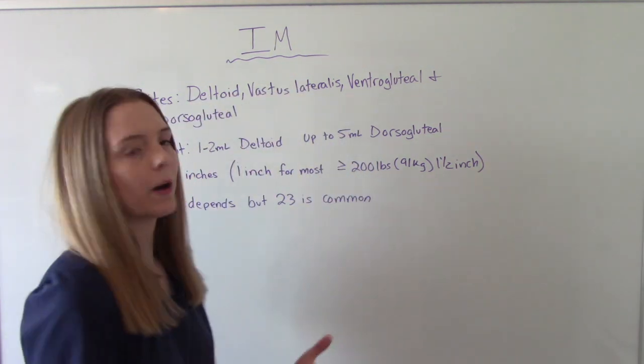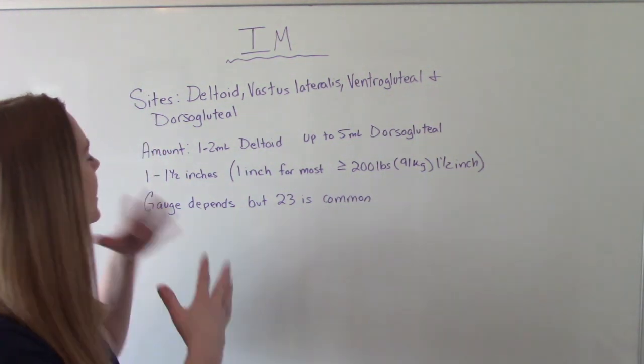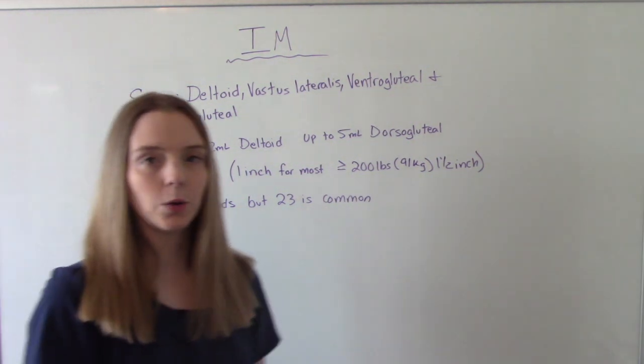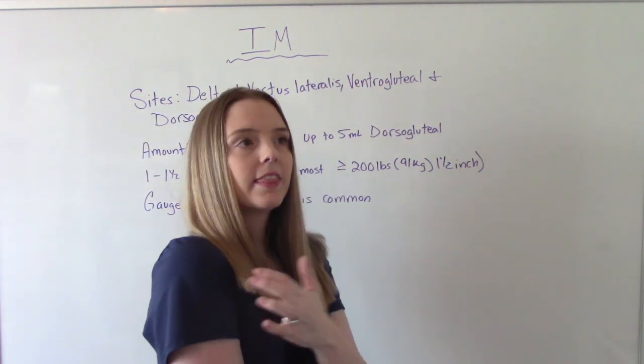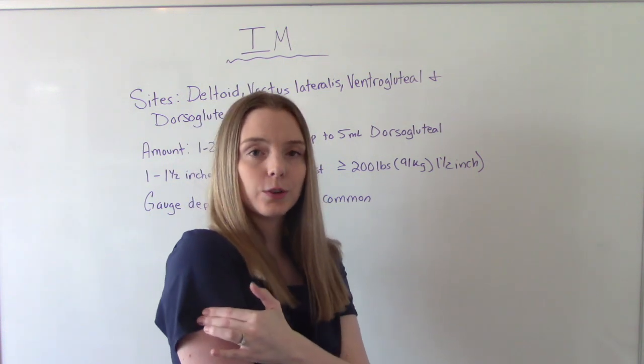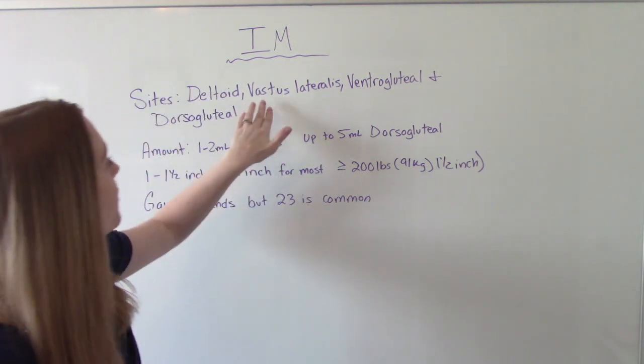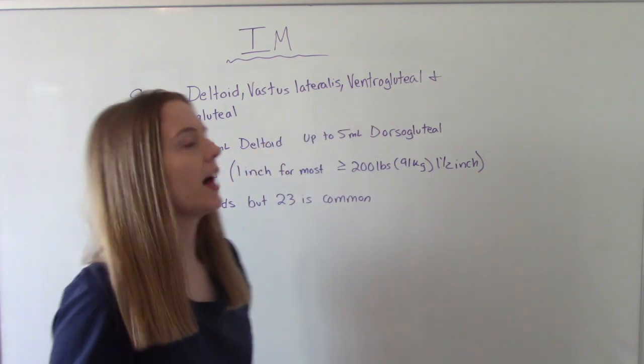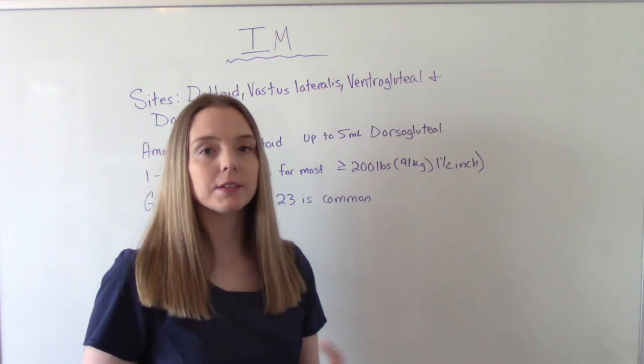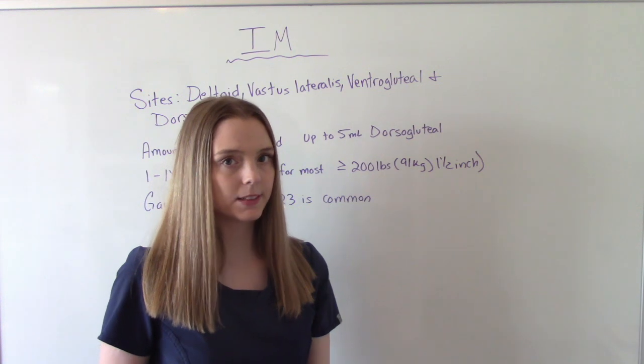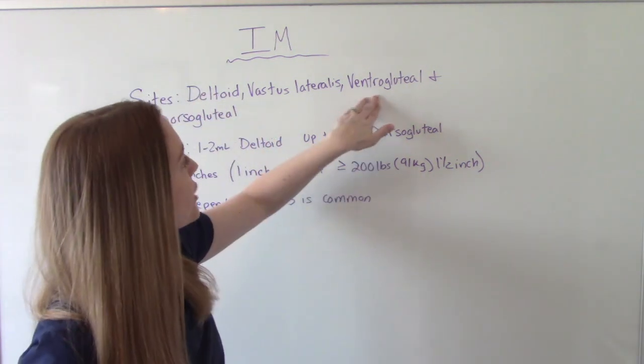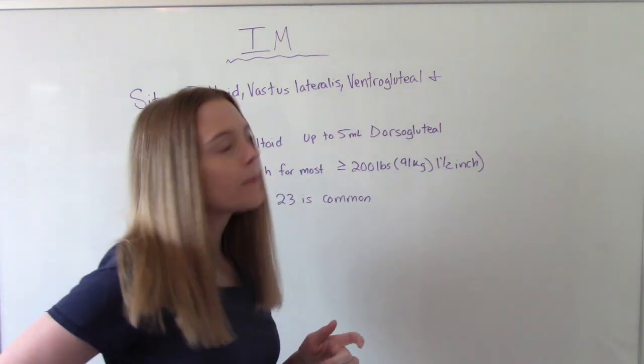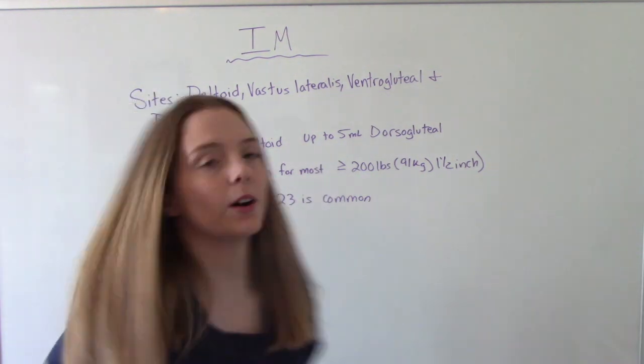Some things you need to know about IM injections. Common sites include the deltoid, which is here. This is the most common site we use on an adult patient. The vastus lateralis, which is on the leg, is the most common site we use in children and babies. Ventral gluteal is on the hip, and then dorsal gluteal, which is on your behind.